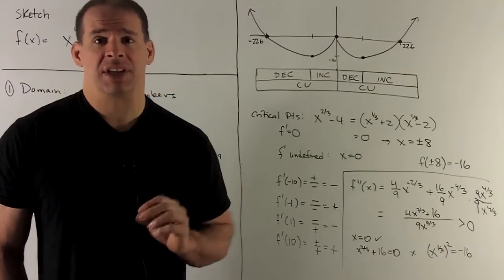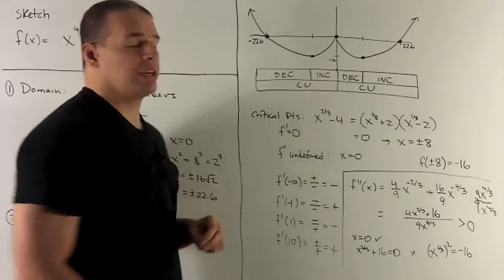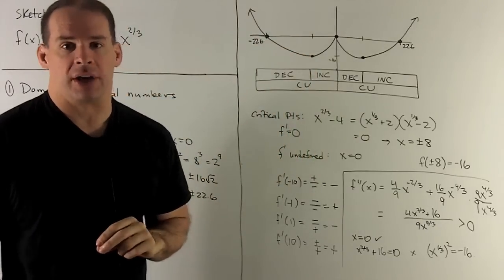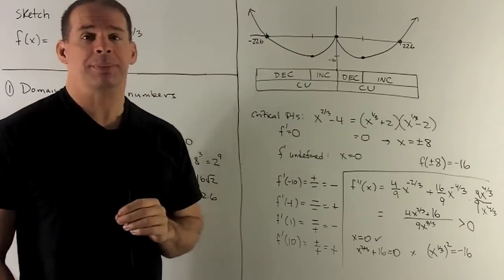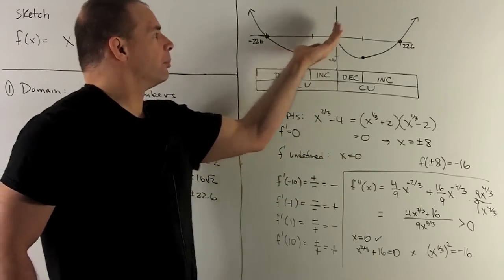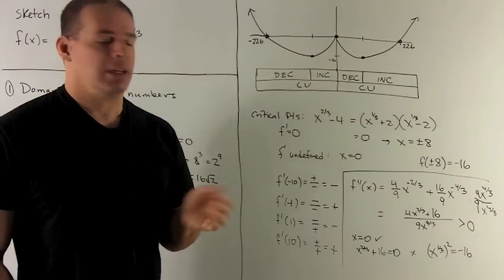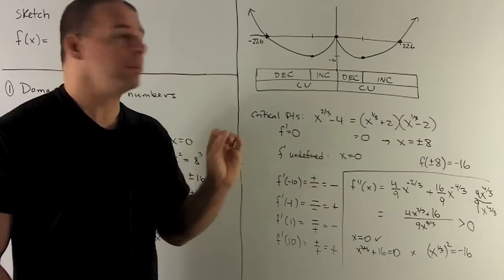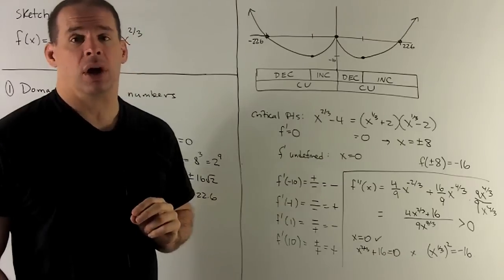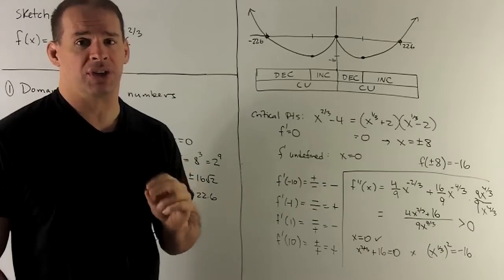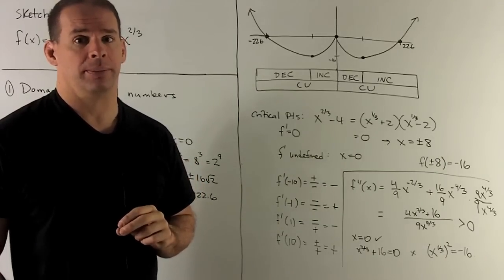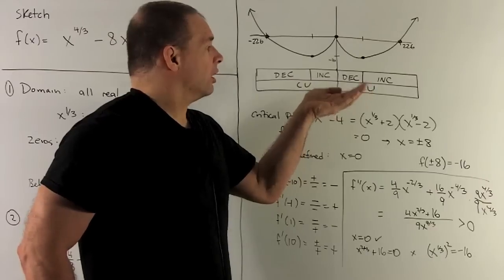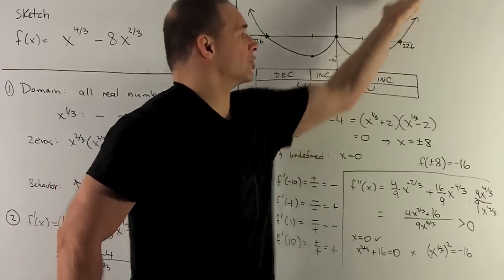Now we connect the dots to get the graph. In the first region, decreasing and concave up until the critical point at x = -8 with a horizontal tangent. Next region, increasing and concave up up to the origin. At x = 0 there's a corner since the derivative is undefined there. Third region, decreasing concave up down to x = 8 with a horizontal tangent. Finally, increasing and concave up through our zero near x = 22.6 and off to infinity.